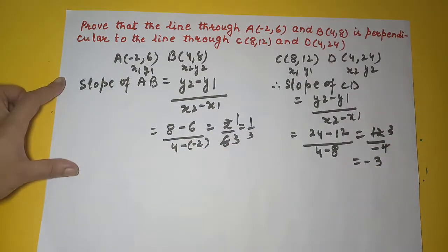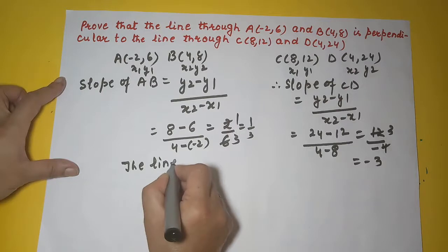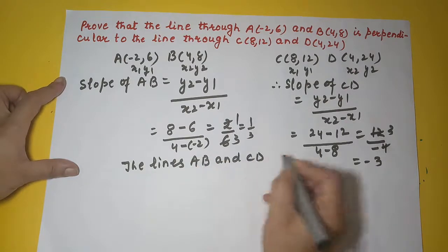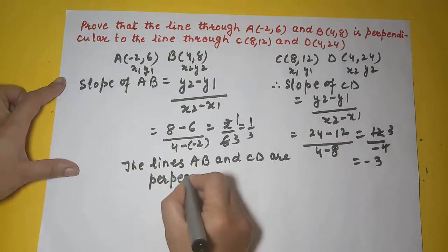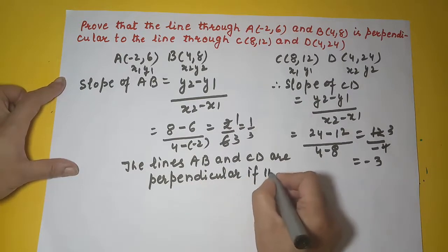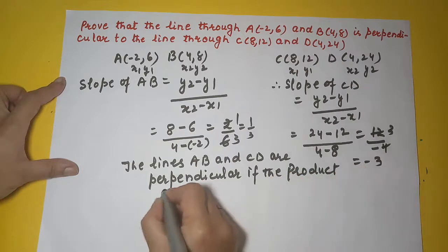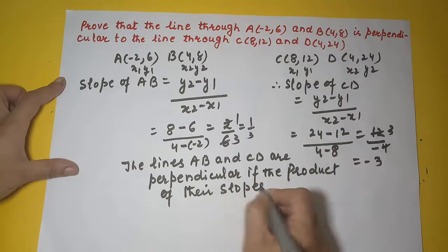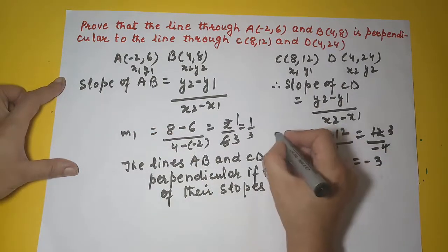Now the lines AB and CD are perpendicular when the product of their slopes is minus 1.